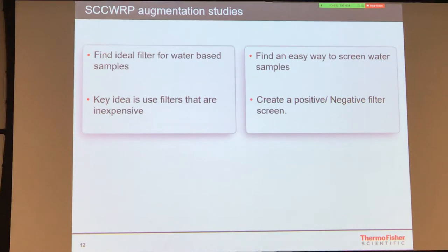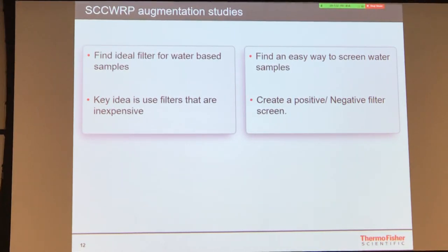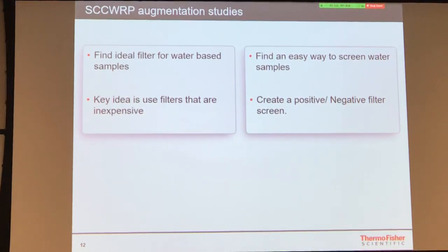What we want to build is a filter screen — you push your sample through it, place it on a bench or even a portable FTIR, and get a pass or fail result. Pass means no microplastics detected above a threshold; fail means something was detected. We do this routinely for oil and water analysis. The same company, OSS, that helped us with those filters is helping with this project as well.